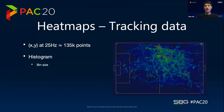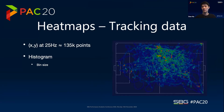We can reduce the bin size when we've got a lot of data — so many points — we can really increase the resolution of a histogram. Here's the same player, same match, same data, but with half-meter by half-meter grids. And you start to see a bit more of what's happening, but it's still not that useful.